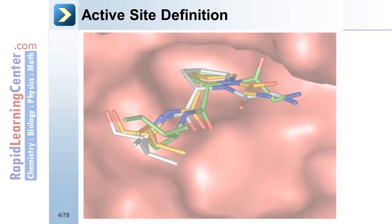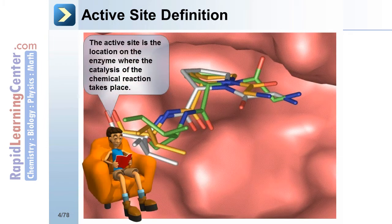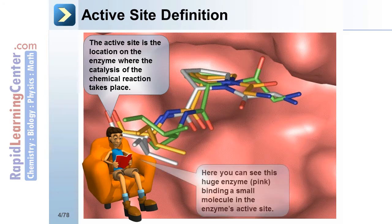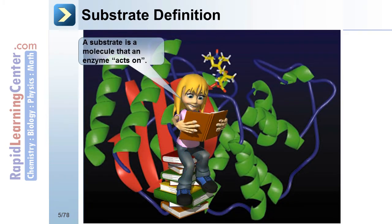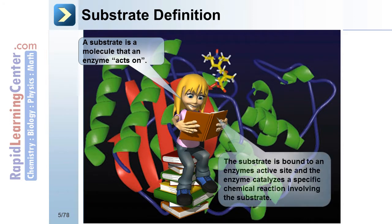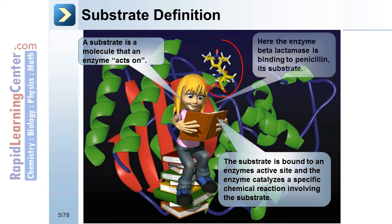Active site definition: The active site is the location on the enzyme where the catalysis of the chemical reaction takes place. Here we can see this huge enzyme — it's in pink — binding a small molecule in the enzyme's active site. Substrate definition: A substrate is a molecule that an enzyme acts on. The substrate is bound to the enzyme's active site and the enzyme catalyzes a specific chemical reaction involving the substrate. Here the enzyme beta-lactamase is binding to penicillin — that's its substrate.